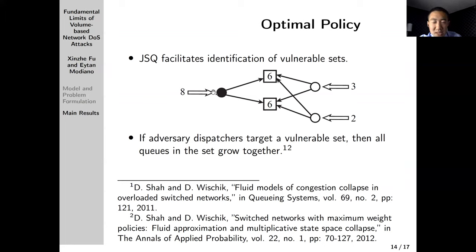Second is that JSQ facilitates the identification of the vulnerable sets. Again, we take this example. If this adversary dispatcher uses JSQ, and these two user dispatchers also are using JSQ, then the total arrival rate to these two servers is 13, and the total service rate is 12. Because they're all doing join-the-shortest-queue, some kind of load balancing is happening. The queue growth rate on both servers will be 0.5. So in this model set, the queues in the set actually all grow together. This notion can be formalized. It can be formally proved by combining the results from these two papers. With these two nice properties of join-the-shortest-queue at hand, we will introduce the optimal policy we come up with, that is a min-zero policy.